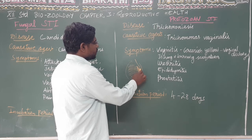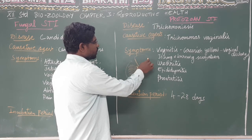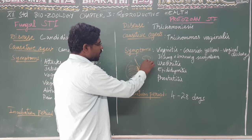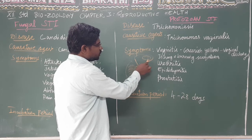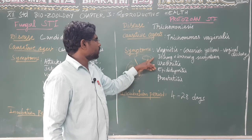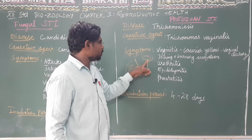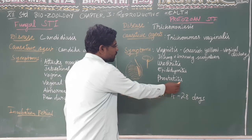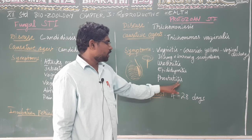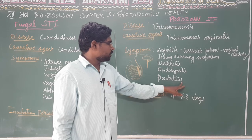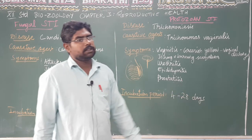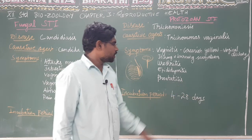Prostatitis is an infection of the prostate gland. The prostate gland is located near the urinary bladder and seminal vesicle. If the prostate gland is infected, it is called prostatitis.